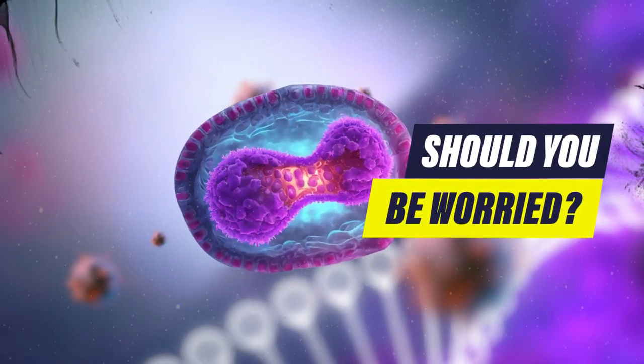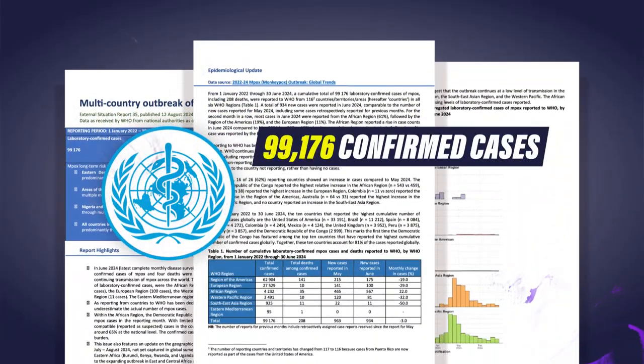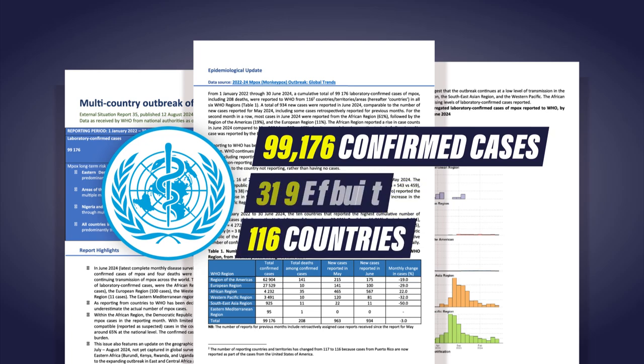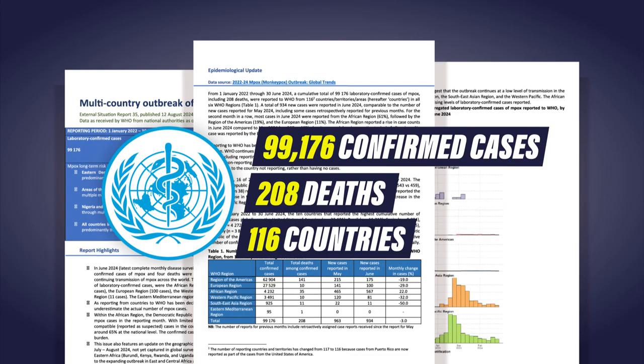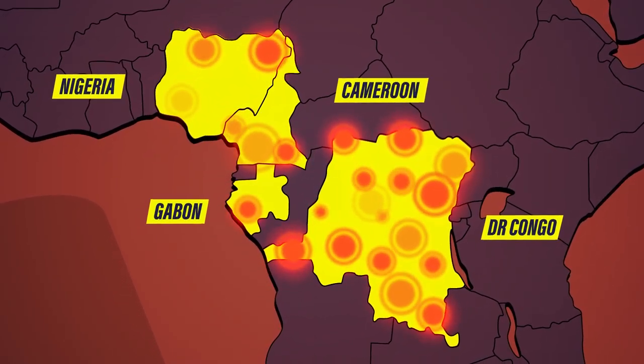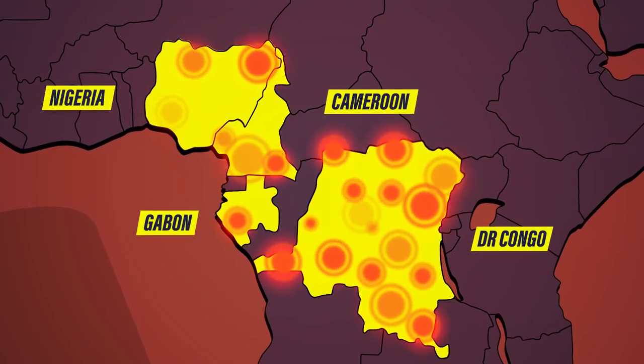Should you be worried about MPOX? According to the WHO, more than 99,000 MPOX cases have been identified across over 110 countries, with approximately 208 officially recorded deaths. So far, the virus has primarily been present in Africa, in countries with less developed healthcare and detection systems.